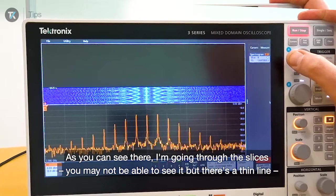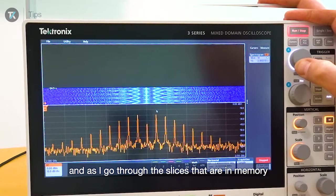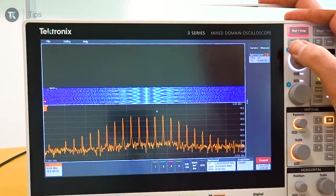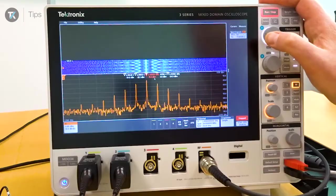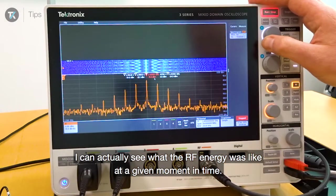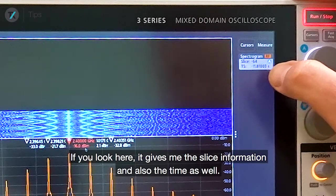As you can see, I'm going through the slices. You may not be able to see it, but there's a thin line, and as I go through the slices that are in memory, I can actually see what the RF energy was like at a given moment in time.